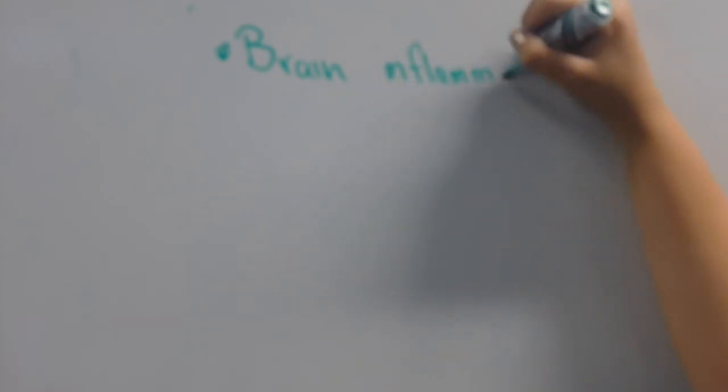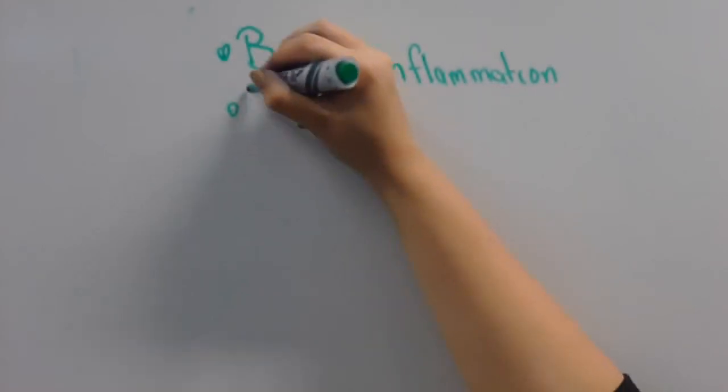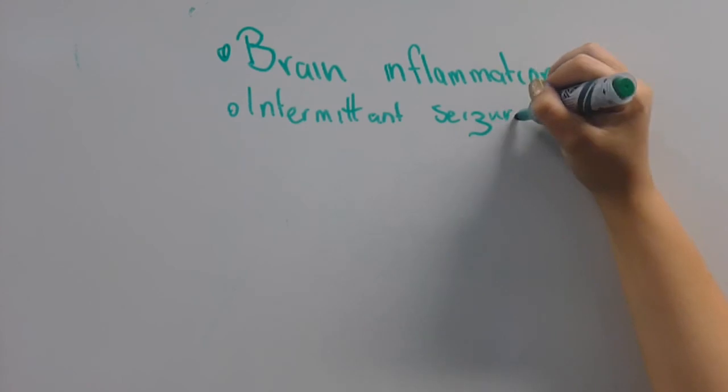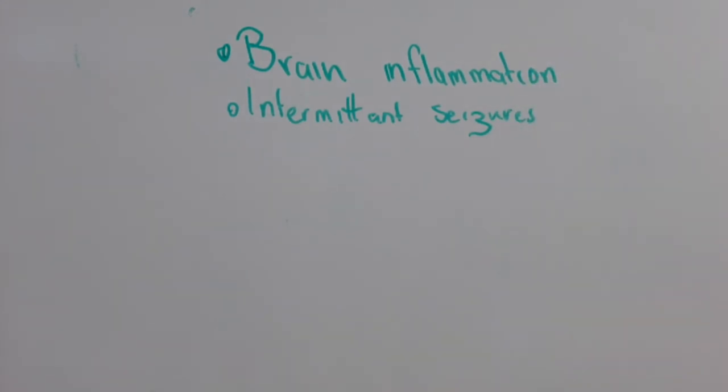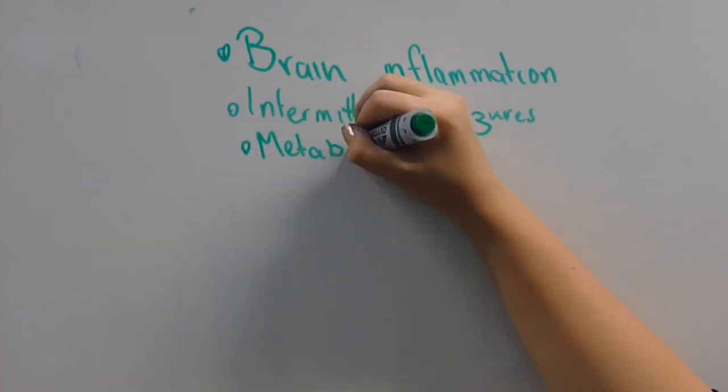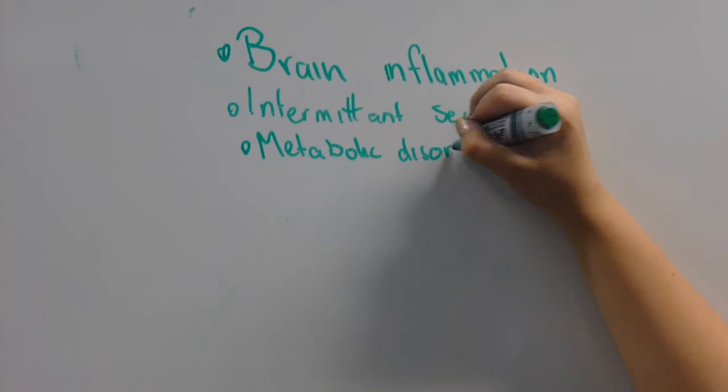Your doctor will first rule out treatable illnesses that can develop like CJD with extremely progressive symptoms. The same symptoms and rapid progression can occur in association with brain inflammation, intermittent seizures, metabolic disorders like vitamin deficiencies, vascular disease of the brain, Alzheimer's disease, and dementias associated with Parkinson's disease.